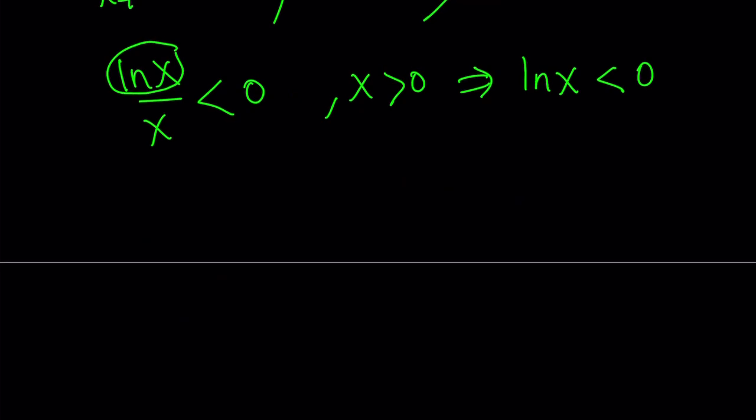Awesome. And what does that imply? If ln x is less than 0, that implies that x is less than 1. But at the same time, x must be greater than 0. So x must be between 0 and 1.